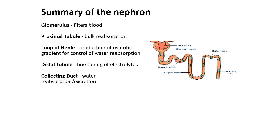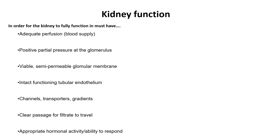To summarize the components of the nephron: there is the glomerulus, which filters blood; the proximal tubule, which is involved in bulk reabsorption; the loop of Henle, which produces osmotic gradients for control of water reabsorption; the distal tubule, which carries out fine tuning of electrolytes; and the collecting duct, which is involved in water reabsorption and excretion.